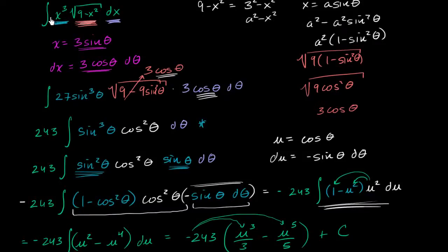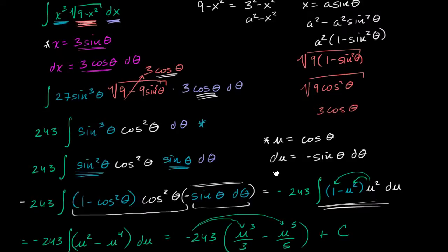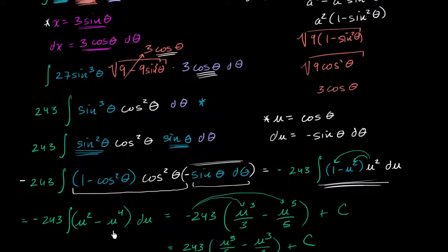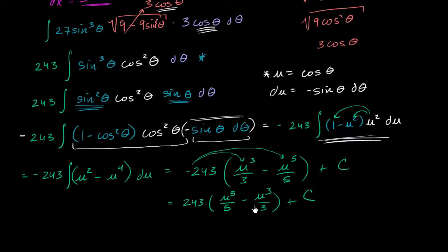In the last video, in order to evaluate this indefinite integral, we first made the substitution that x is equal to 3 sine theta. This got us to an integral of that form. Then we were able to break up these sines and cosines and use trig identities to get it into a form where we could do u substitution. We did another substitution where we set u equal to cosine of theta. And finally, we were able to get it into a form where we could take the antiderivative. We got the final answer here in terms of u.